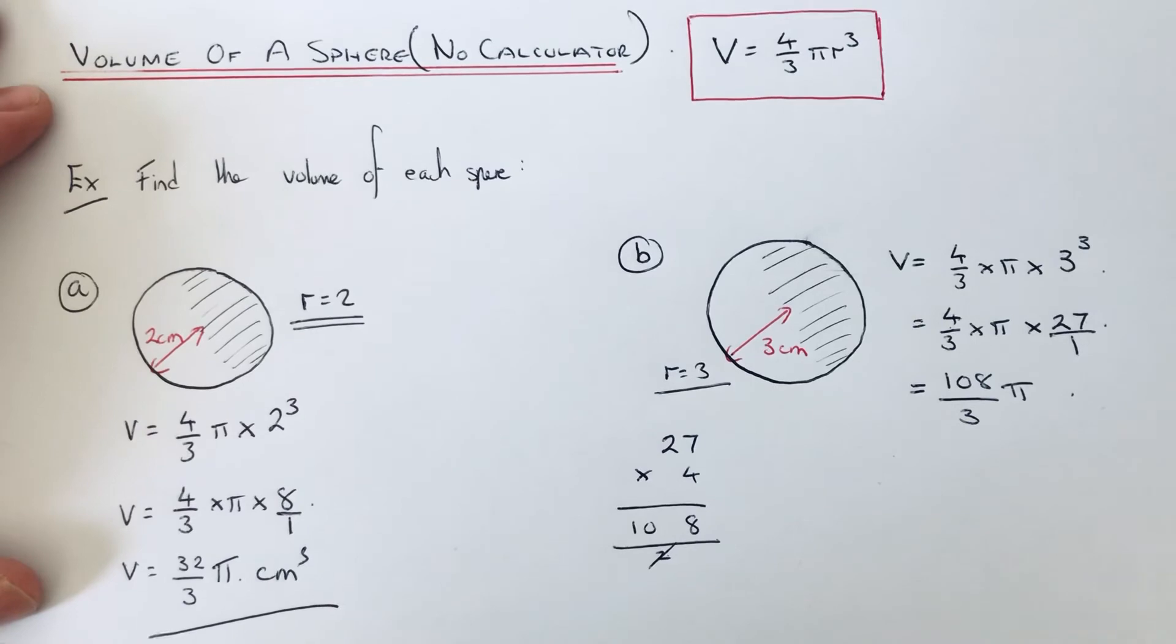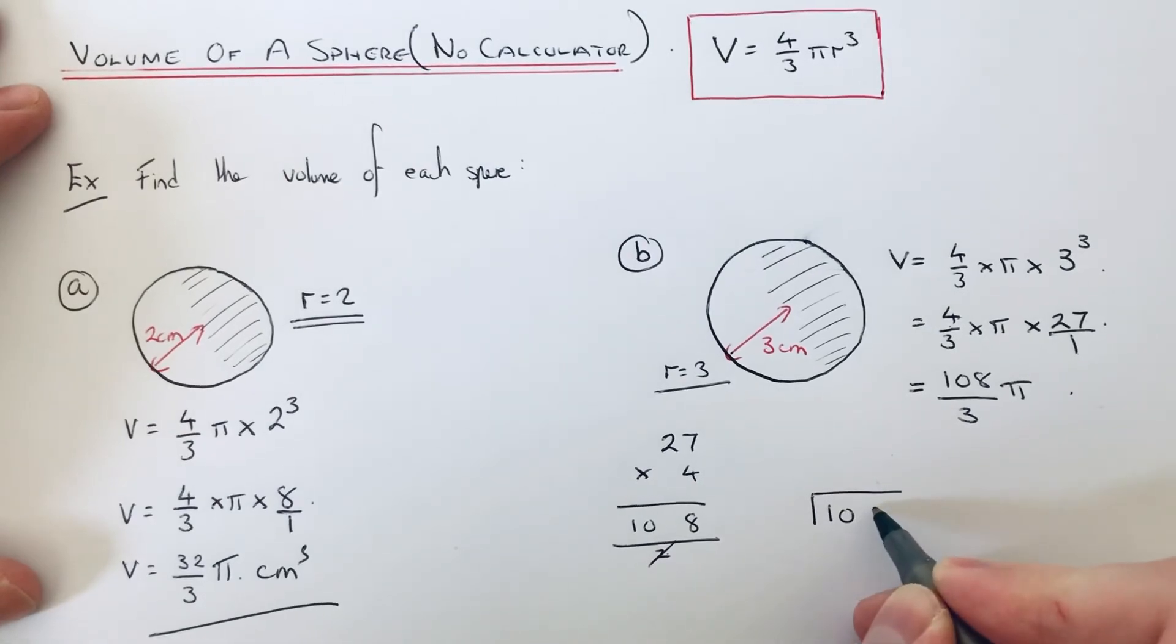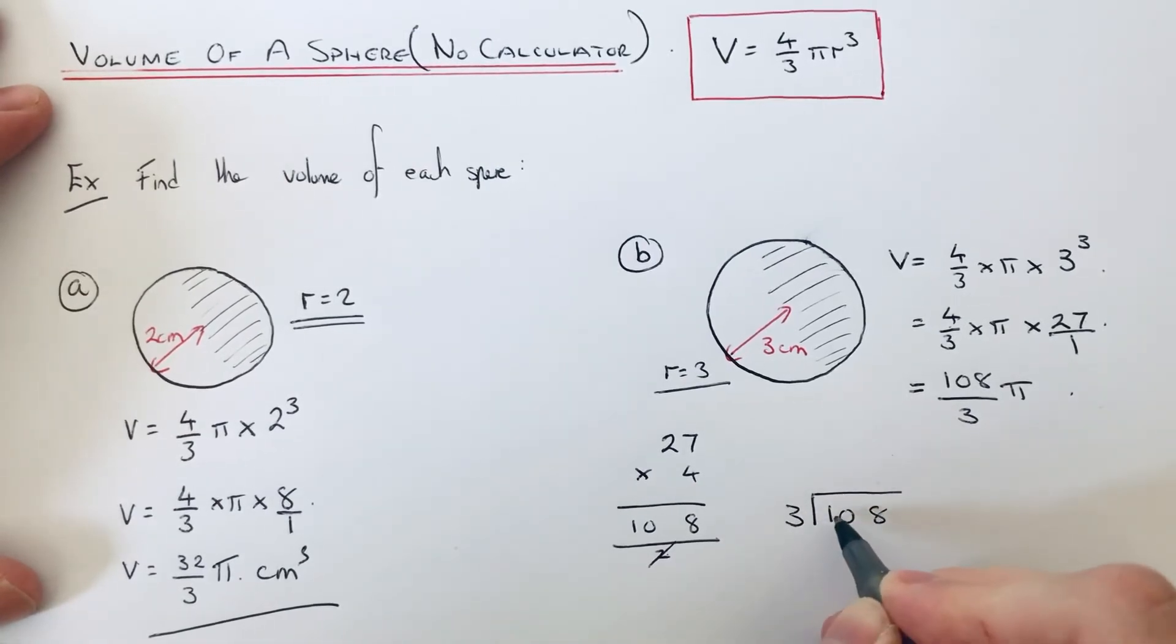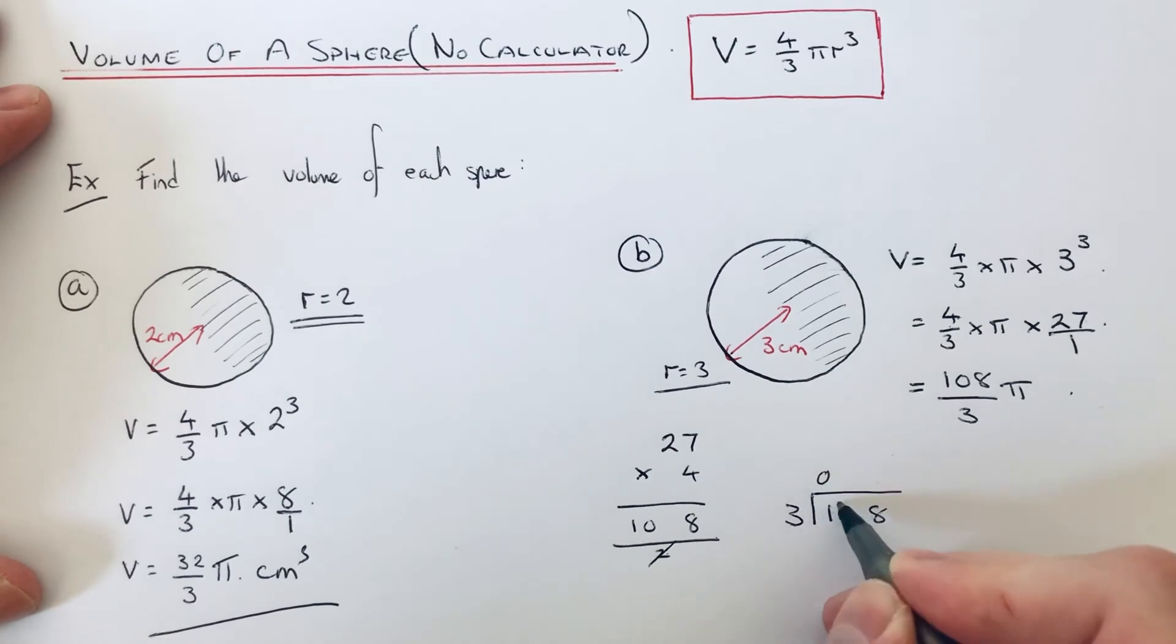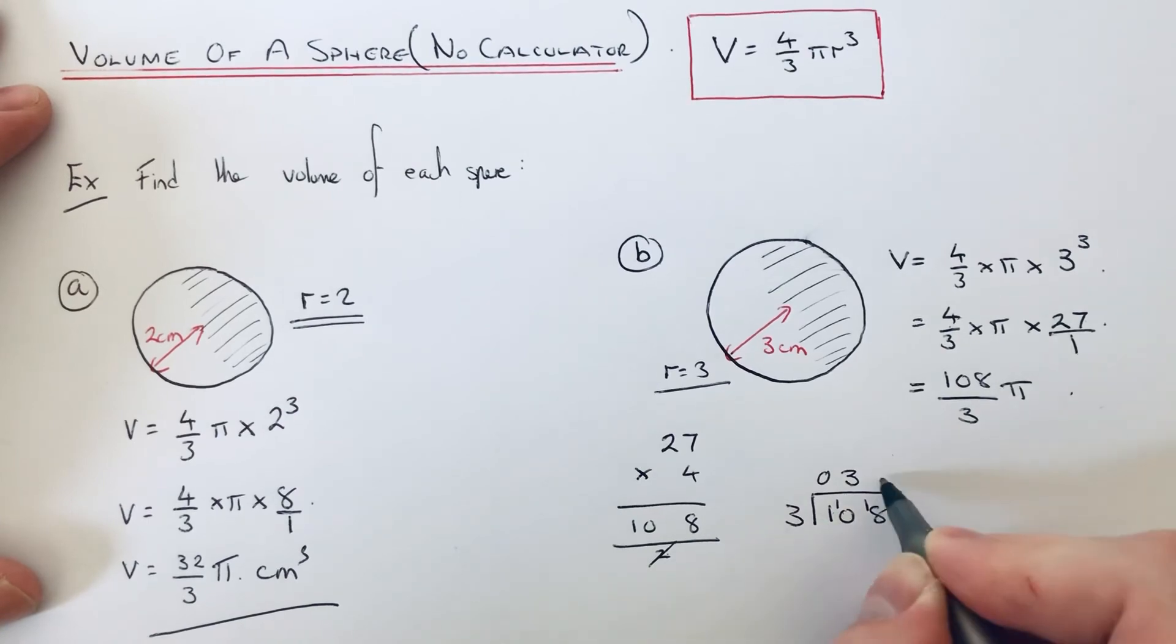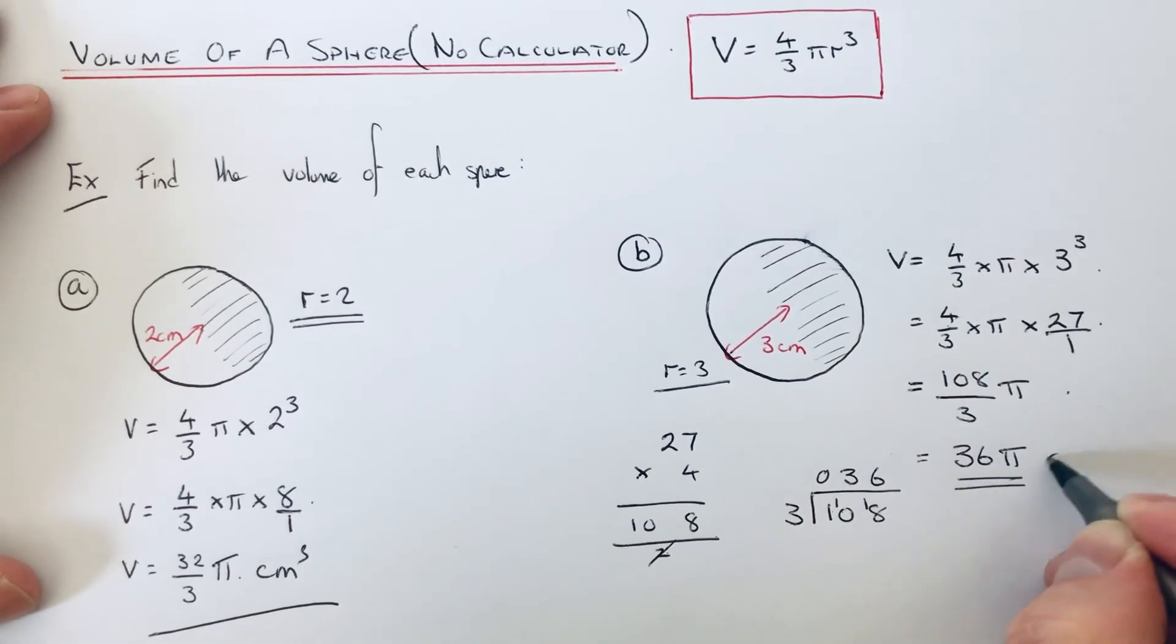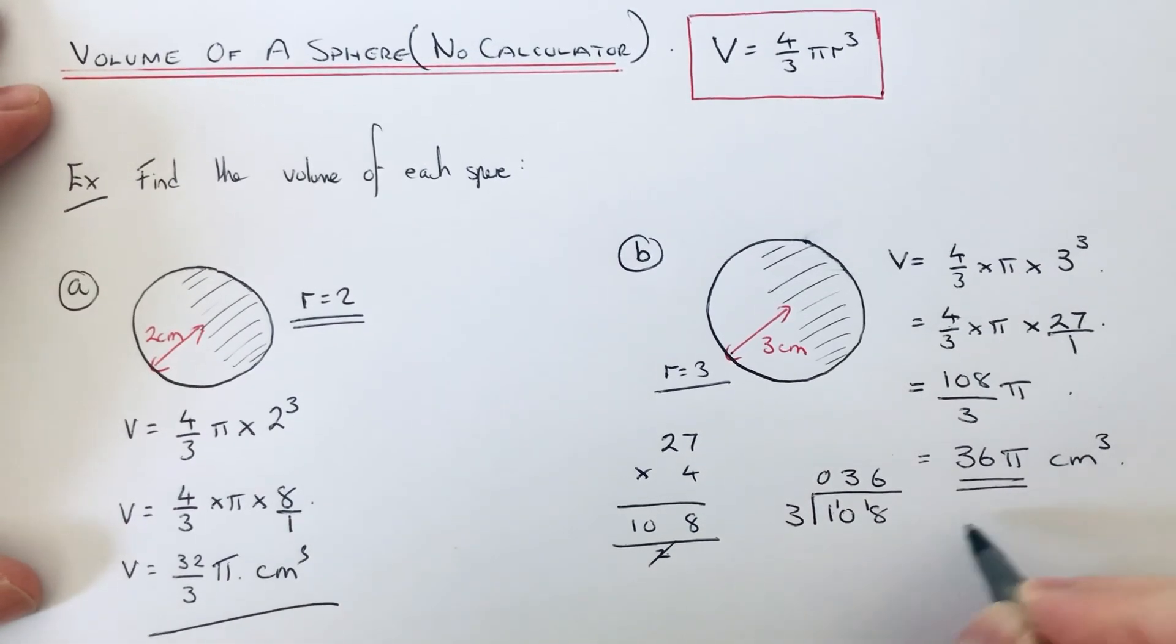Now I'm just going to check because I think 3 goes into 108. If we do some division on the side of the page, 1 divided by 3 is 0 remainder 1, 10 divided by 3 is 3 remainder 1, 18 divided by 3 is 6. So that simplifies to 36. Just put the pi on at the end. That is your final answer.